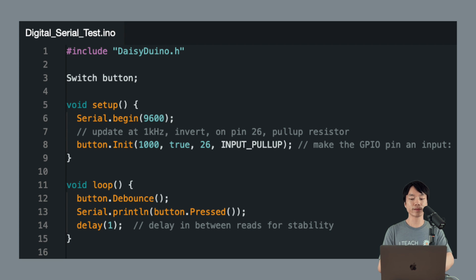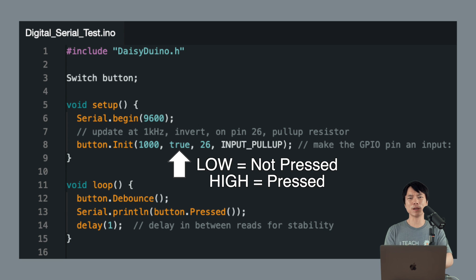And let's set up the button next. We'll use DAISY-DUINO's button init function. The 1000 is the update rate in Hertz. True for inversion, which I'll explain shortly. 26 is pin D26. And finally, input pull-up for using the internal pull-up resistor as mentioned earlier. Because we inverted, the input is now going to be low when the button is not pressed, and high when it is pressed down. This feels a bit more intuitive.